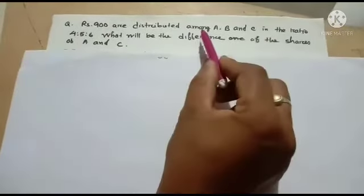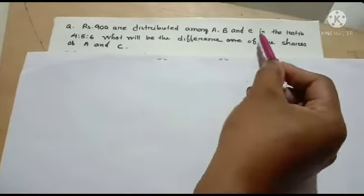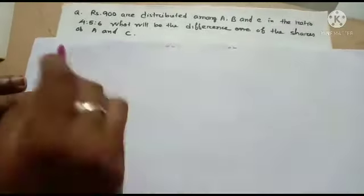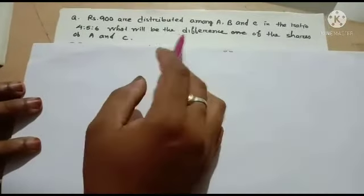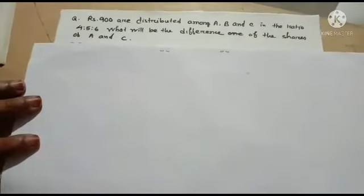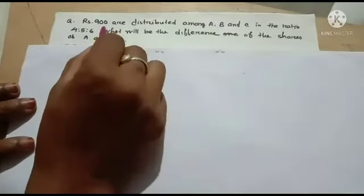Rs. 900 are distributed among A, B, and C in the ratio 4:5:6. What will be the difference of the share of A and C?